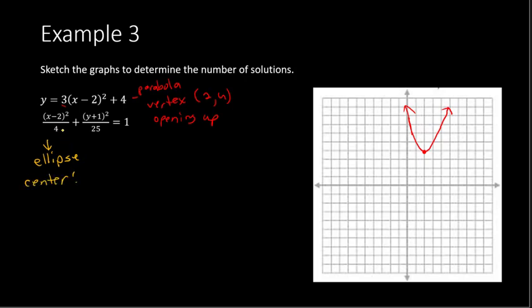The second equation is an ellipse — it has a plus sign and equals 1. The center is at (2, negative 1), found by changing the signs of negative 2 and positive 1. With a 25 under the y term, the square root is 5, so we go up 5 from center — which reaches the vertex of the parabola — and down 5 to the other side. With 4 under the x term, the square root is 2, so we go 2 in each direction horizontally. The ellipse intersects the parabola at one point, giving us one solution.